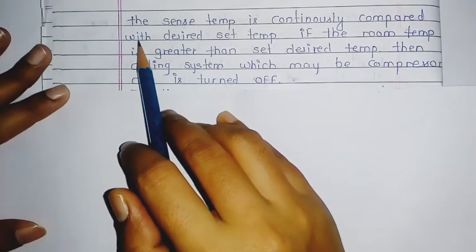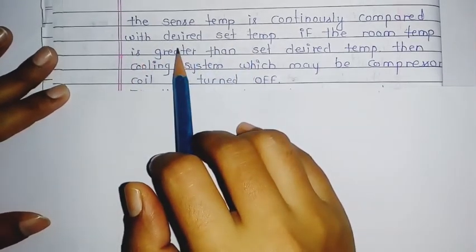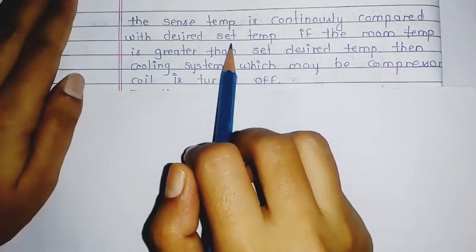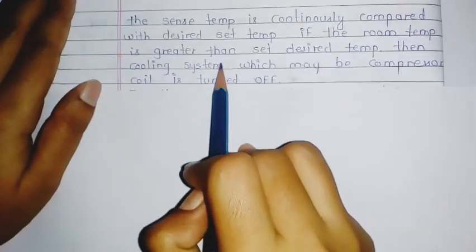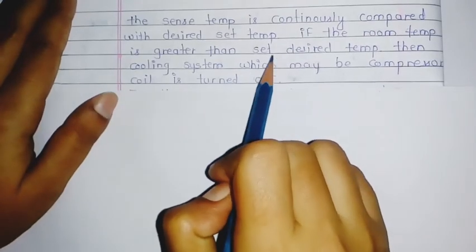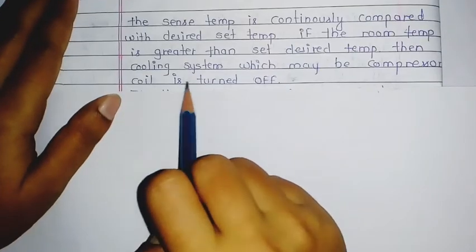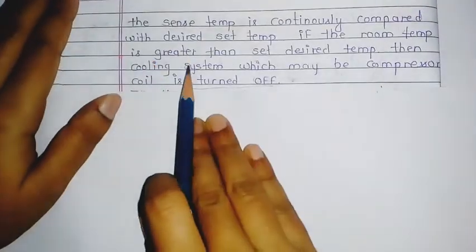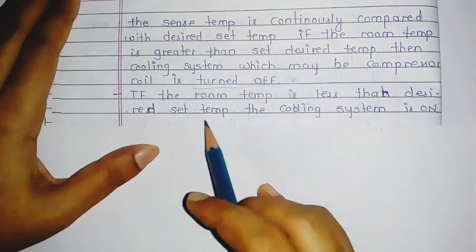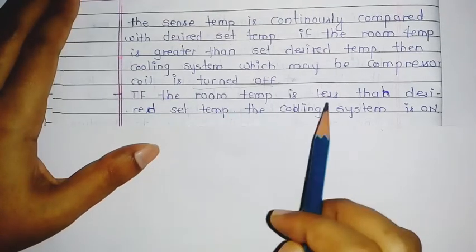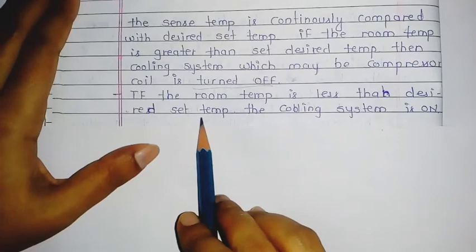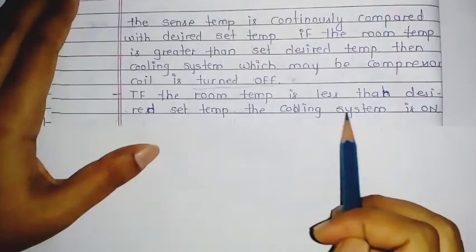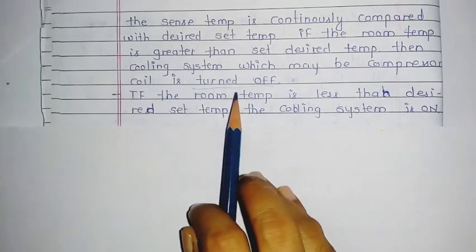The sensed temperature is continuously compared with the desired set temperature. If the room temperature is greater than the set temperature, then the cooling system — which may be the compressor coil — is turned off. If the room temperature is less than the desired set temperature, the cooling system is turned on.